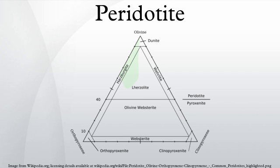Oceanic plates are usually subducted back into the mantle at subduction zones. However, pieces can be emplaced into or overthrust on continental crust by a process called obduction, rather than carried down into the mantle. The emplacement may occur during orogenies, as during collisions of one continent with another or with an island arc. The pieces of oceanic plates emplaced within continental crust are referred to as ophiolites. Typical ophiolites consist mostly of peridotite plus associated rocks such as gabbro, pillow basalt, diabase dike complexes, and red chert.